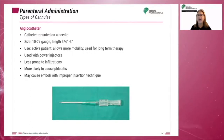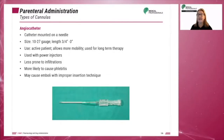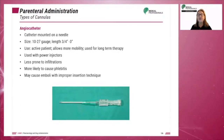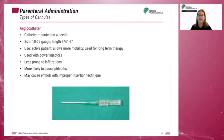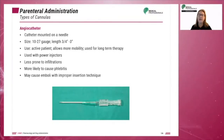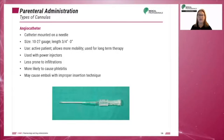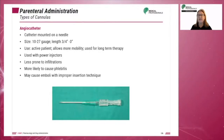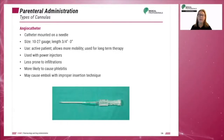The angiocatheter is a catheter mounted on a needle. It is 10 to 27 gauge and three-quarters to 3 inches in length. These are used for active patients and allow for more mobility than wing-tips. They can be used for long-term therapy and are less prone to infiltrations. They can also be used with power injectors. However, they are more likely to cause phlebitis, can kink, and may cause emboli with improper insertion techniques.